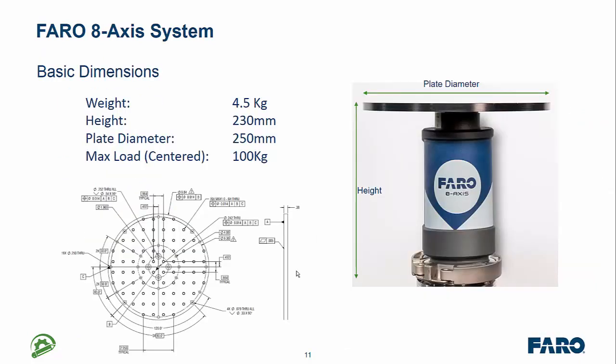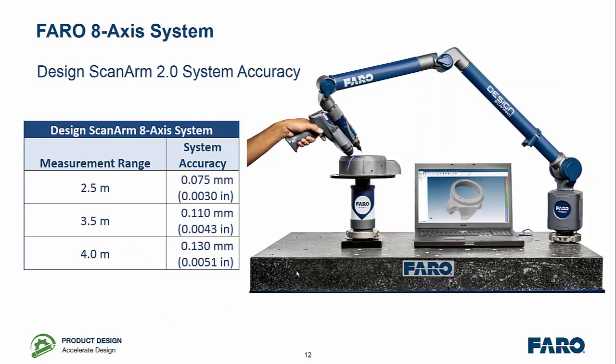The device itself is very small and very portable with a height of around 230mm and a weight of 4.5kg. With regards to accuracy using the design scan arm, we've not compromised accuracy at all. We're still up to 75 microns on a 2.5, 110 microns on a 3.5 and 130 microns on a 4m arm.